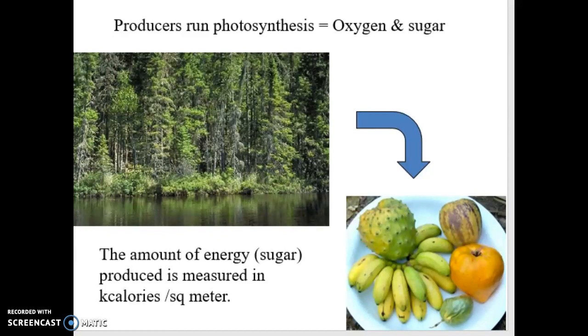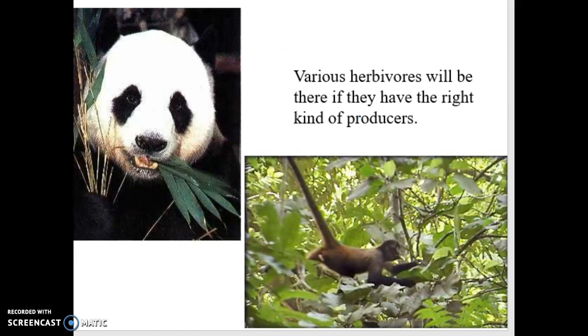So now that number determines the first-level consumers, or what we call the herbivores. Now, the herbivores are only there if there are the right type of producers. So pandas eat bamboo. We won't see a panda in Illinois, or in the United States for that matter, because we don't naturally have bamboo. Now, could we grow enough bamboo here to support a panda population? Possibly, but it would take a lot of bamboo, a big area of bamboo, to have the right kind of calories necessary for pandas and a population of pandas. Spider monkeys, down to the right there, they don't live in Illinois because we don't have the right type of fruit trees.